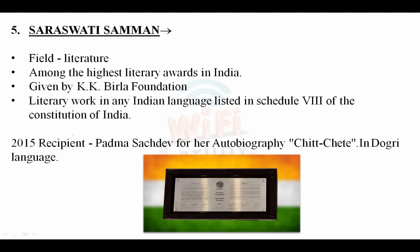Saraswati Samman is the highest among literature awards in India, given by the K.K. Birla Foundation for literary work in any Indian language listed in Schedule 8 of the Constitution. The last recipient was Padma Sachdeva for her autobiography 'Chit Chitte' written in Dogri language. She received this award in 2015.